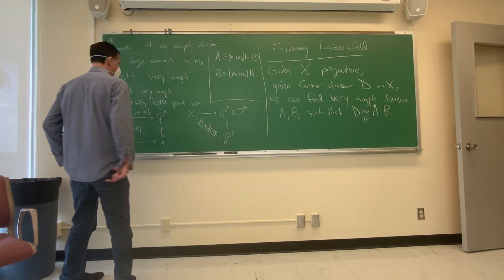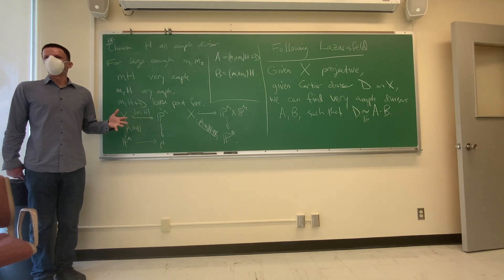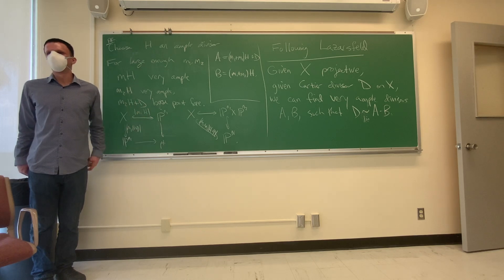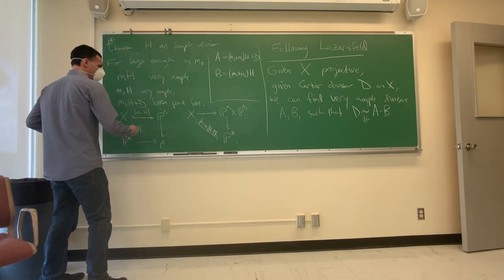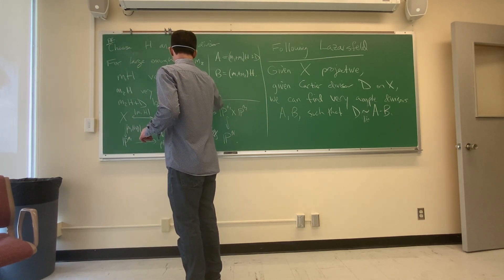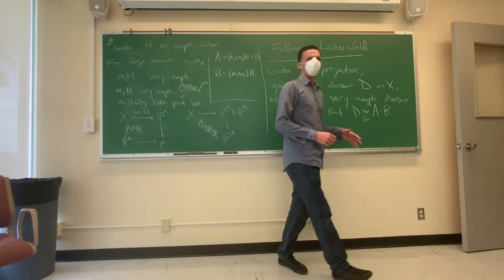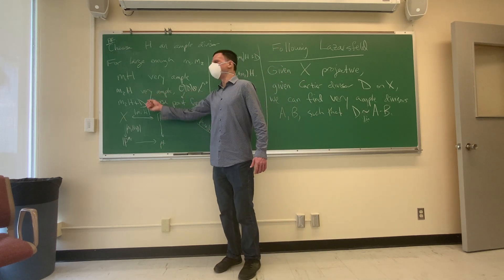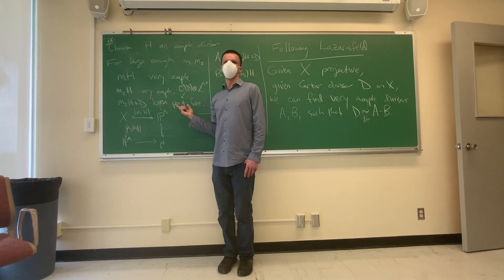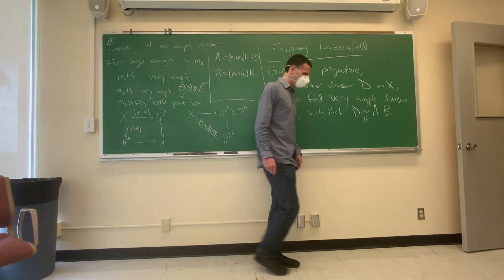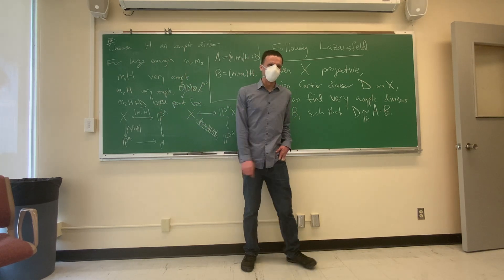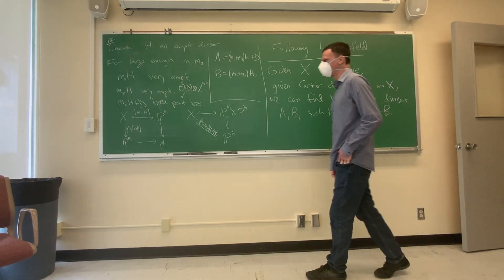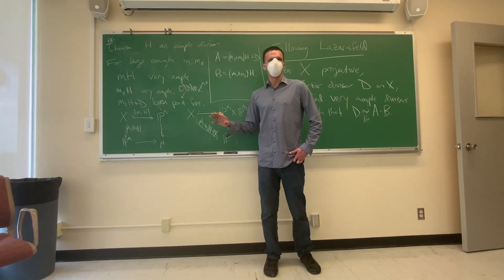Question: what's the argument that it's base-point-free? Answer: an ample divisor makes things globally generated, and base-point-free is the same as globally generated. But why is m₂H plus D globally generated? Because you take m₂ big enough — you fix D and H, and by making m large enough you can make all these conditions true simultaneously. The thing that's fixed is D, and H is also fixed; the m's let you scale up.